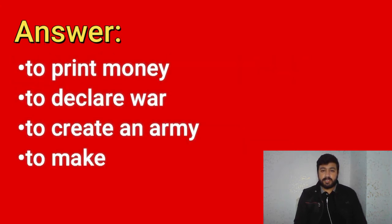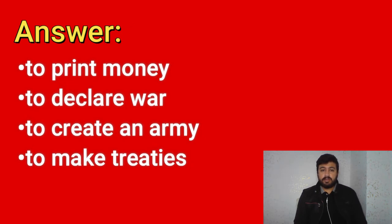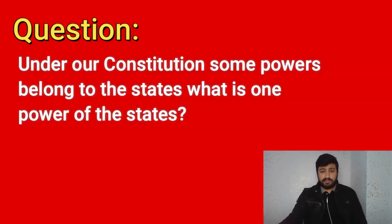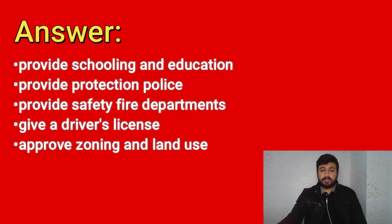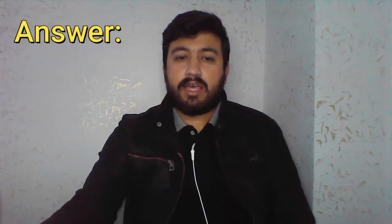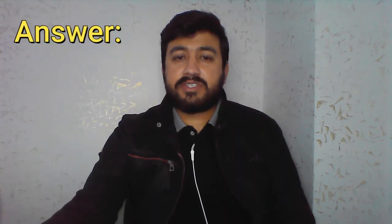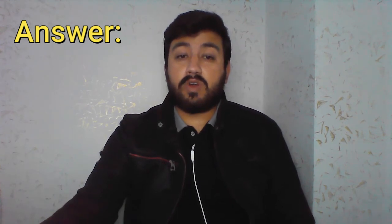Under our Constitution, some powers belong to the federal government. What is one power of the federal government? To print money, to declare war, to create an army, to make treaties. Under our Constitution, some powers belong to the states. What is one power of the states? Provide schooling and education, provide protection (police), provide safety (fire department), give a driver's license, approve zoning and land use. What is the capital of your state? Answers will vary. D.C. residents should answer that D.C. is not a state and does not have a capital.